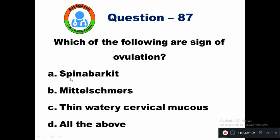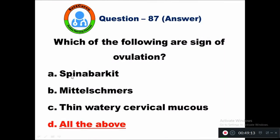Question 87: Which of the following are signs of ovulation? Option A spinnbarkeit, B mittelschmerz, C thin watery cervical mucus, D all the above. The right answer is all of the above — spinnbarkeit, mittelschmerz, and thin watery cervical mucus are all signs of ovulation.